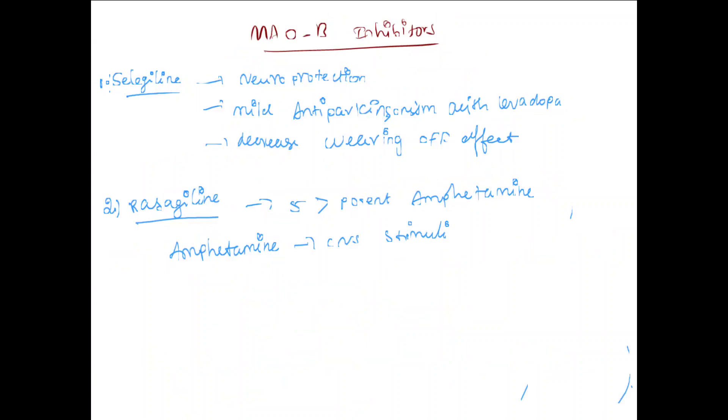MAOB inhibitors include selegiline and rasagiline. Selegiline provides neuroprotection and mild anti-Parkinsonian effects. These drugs should be given with levodopa to decrease the wearing-off effect. Rasagiline is five times more potent than amantadine.